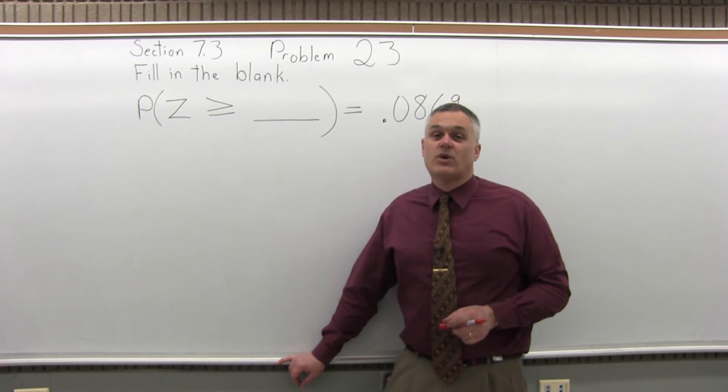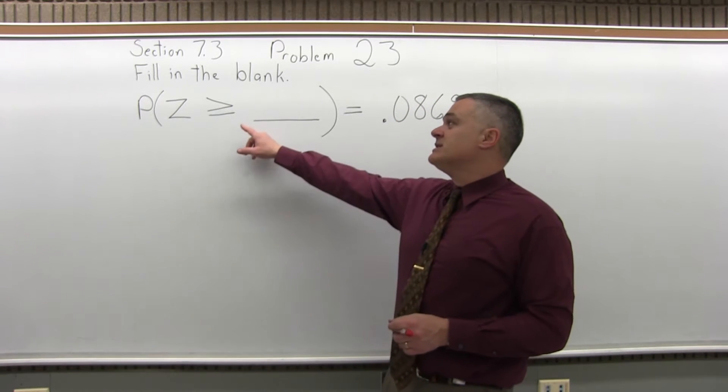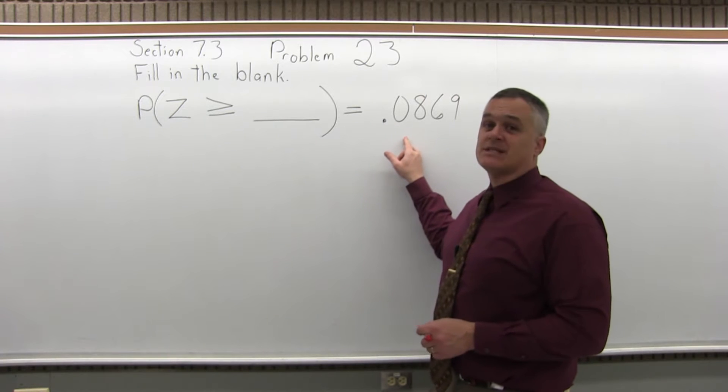This is Section 7.3, Problem number 23. It says fill in the blank. The probability that Z is greater than or equal to blank equals .0869.